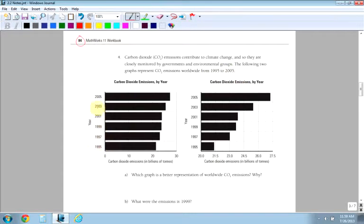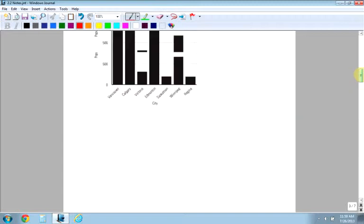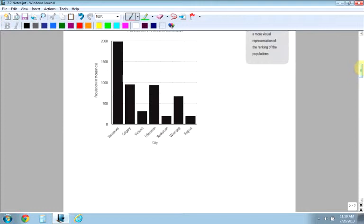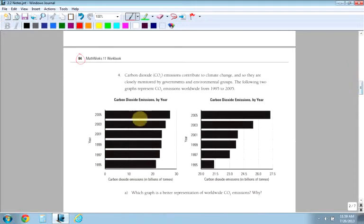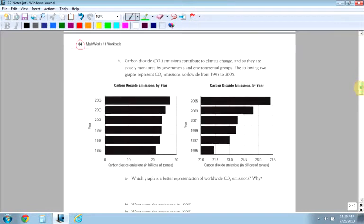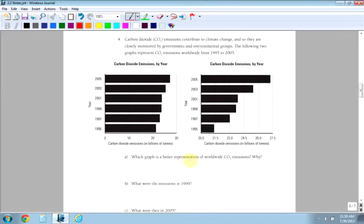The following two graphs represent CO2 emissions worldwide from 1995 to 2005. They have the data, the years along the side, and these are a horizontal bar graph. What we saw before was a vertical bar graph. Vertical is up and down. You can have those two different types, but bar graphs always have spaces in between. So what are the questions based on this? Which graph is a better representation of the CO2 emissions? The first one or the second one? Well, it's actually the second one because you can see the data more clearly.